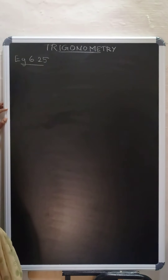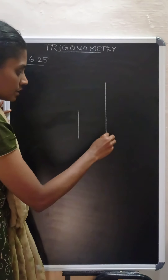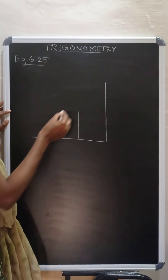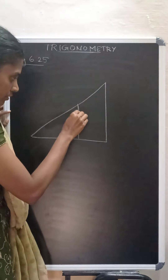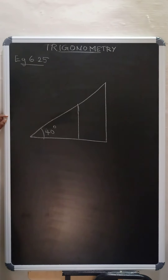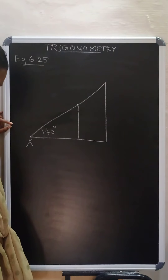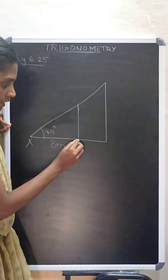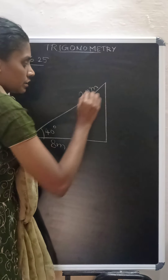Now read line by line and draw the diagram. Two trees are standing on a flat ground. This is one tree and this is another tree, standing on a flat ground. The top of both the trees are viewed from an angle of 40 degrees from the same point. If the horizontal distance between X and the smaller tree is 8 meters — so this is 8 meters. This is the smaller tree. And the distance of the top of the two trees is 20 meters — these two is 20 meters.